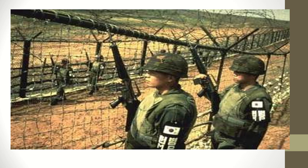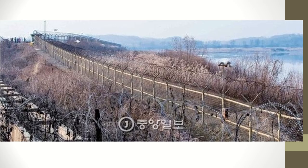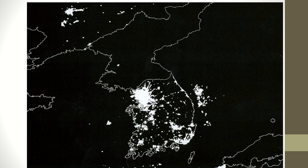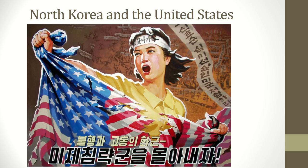The demilitarized zone today is still considered one of the most dangerous borders, and people are often not allowed anywhere close to visit. As far as the United States was concerned, their intervention in Korea was justified because they believe they saved South Korea from becoming communist like the North. A satellite image showing North and South Korea is cited by Americans as proof — all the lights in South Korea show that it has prospered more under American influence than the North has under communist influence.